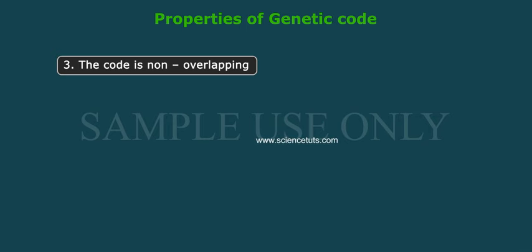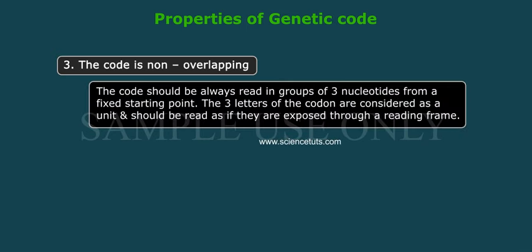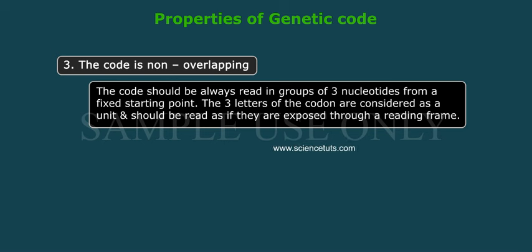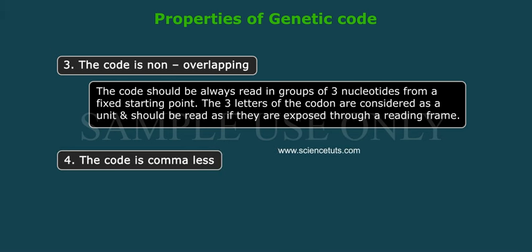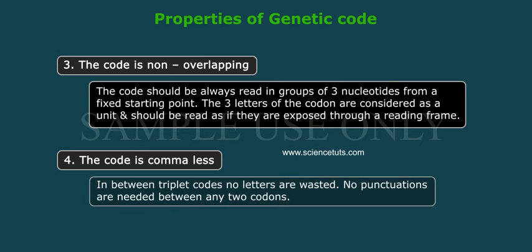Property 3: The code is non-overlapping. The code should always be read in groups of three nucleotides from a fixed starting point. The three letters of the codon are considered as a unit and should be read as if they are exposed through a reading frame. Property 4: The code is comma-less. In between triplet codes, no letters are wasted, and no punctuations are needed between any two codons.